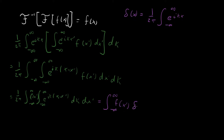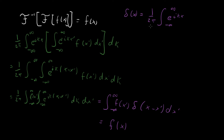Substituting that in, the one over two pi constant cancels and we're left with the integral from minus infinity to infinity of f of x prime times delta of x minus x prime, dx prime. Using the sifting property of the delta function, integrating over x prime sets x prime equal to x everywhere, so the whole expression equals f of x. We started with the integral definition for the Fourier transform and inverse Fourier transform, rearranged terms, applied the delta function property, and got f of x back out.